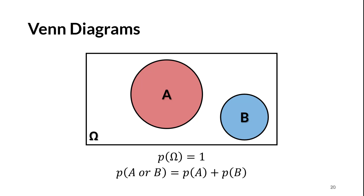We discussed the three axioms of probability previously. If we set the area of each object equal to its probability, the rectangle has an area of 1, because omega, or sample space, has a probability of 1 — this is the second axiom. Any events drawn inside the box have to stay inside it and can't be bigger than that. This also helps us understand the third axiom.